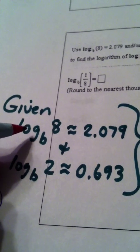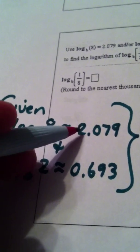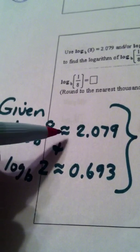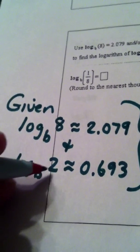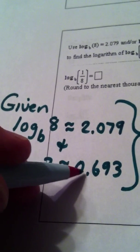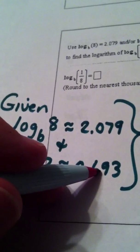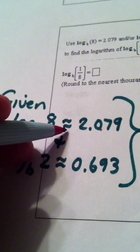They tell us there's a log function base b and when you put in 8 you get out the answer approximately 2.079. So the log base b of 8 is approximately 2.079. The log base b of 2 is approximately 0.693. So when you put 2 into this function you get out this answer. When you put 8 into this function you approximately get out this answer.